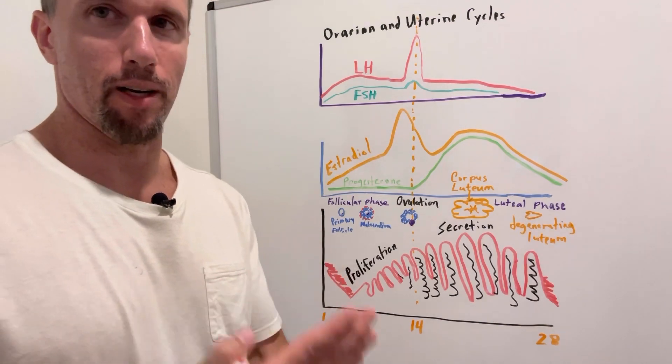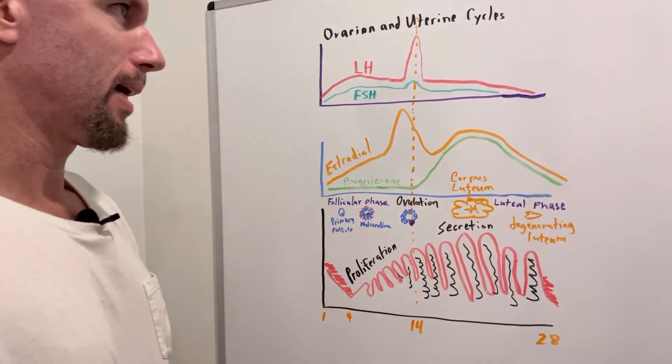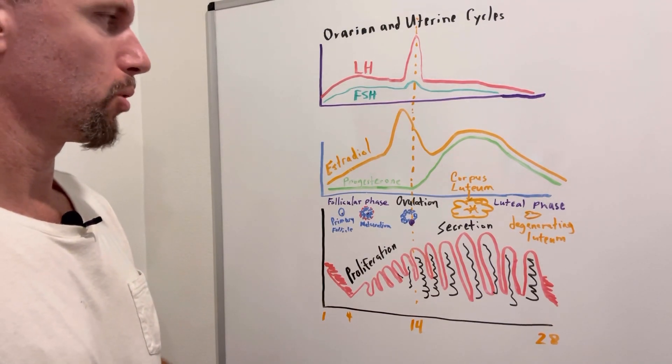If you don't have an ovulation event, you don't have ovum. If you don't have ovum, you can't fertilize anything. So that's how oral contraceptives, most of them work.